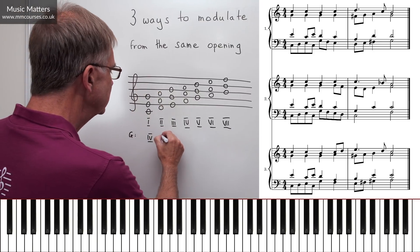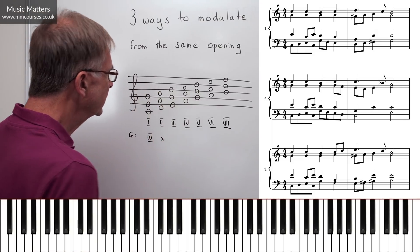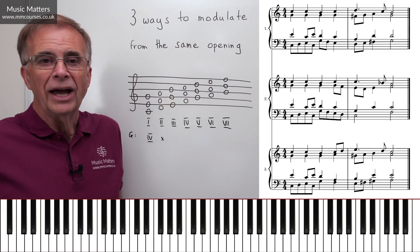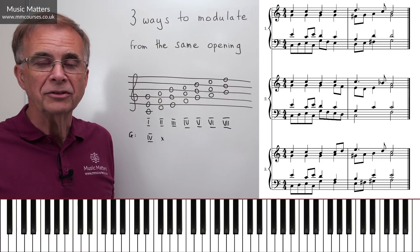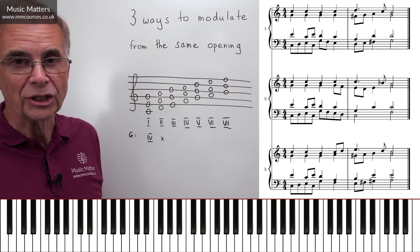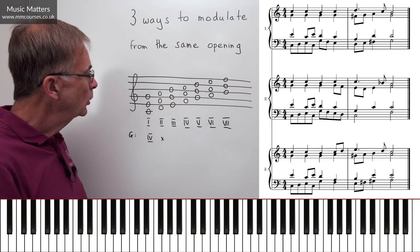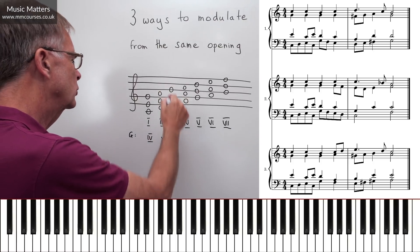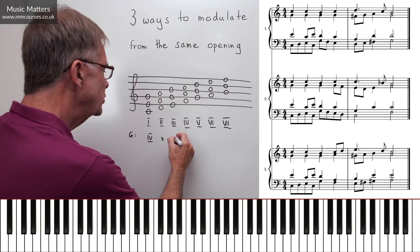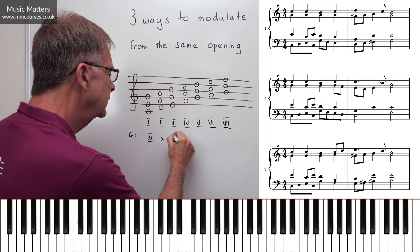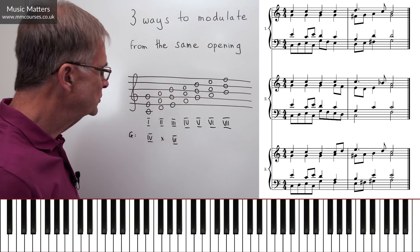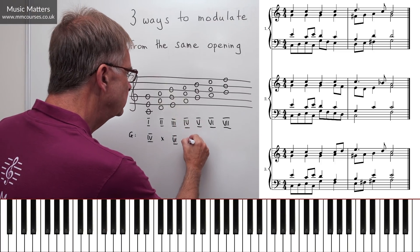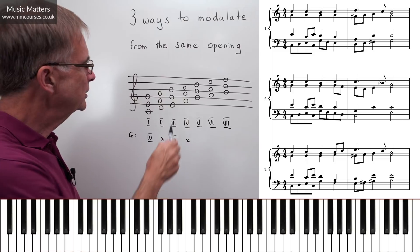Chord II is no good because it's got F natural in it, and in G major we need an F sharp. Chord III in C major is chord VI in G major — so that's a possible pivot chord. Chord IV — no good, it's got F natural in it, same reason as chord II.